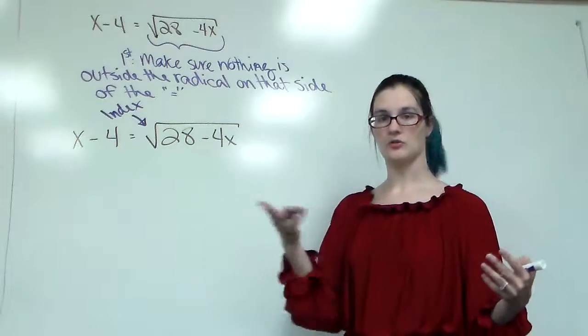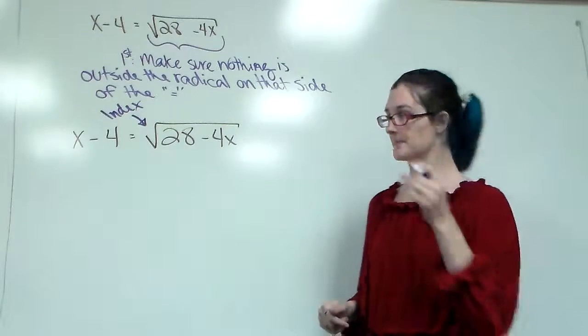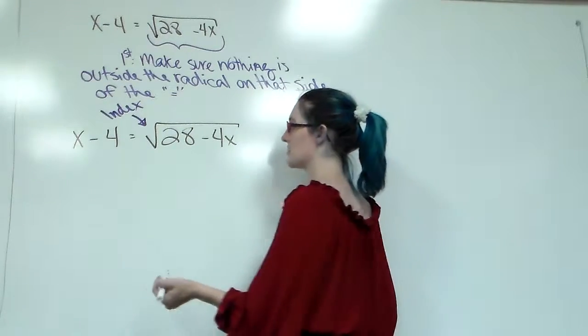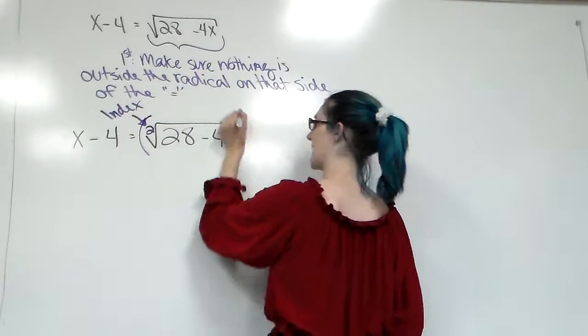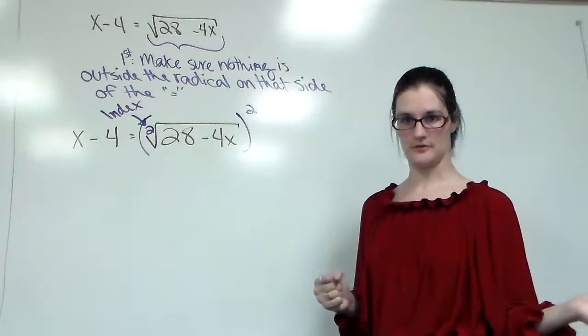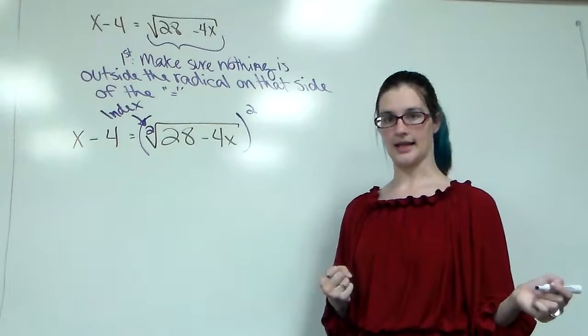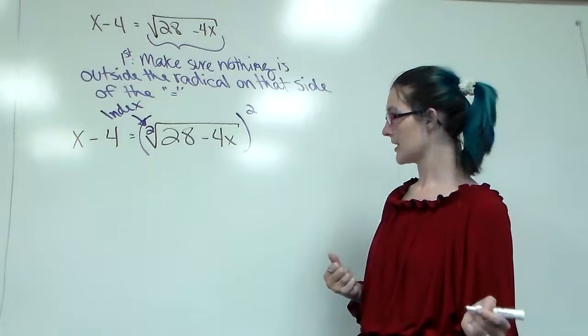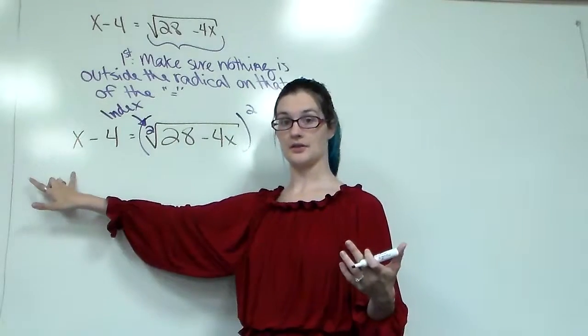So it's like we don't write over 1's or exponent of 1's. We don't write the index of 2's. So you're going to take whatever your index is and you're going to make it into an exponent so that it reduces away your radical. The square root of something squared is the radicand, correct? However, we have that rule, what you do to one side, you must do to the other.